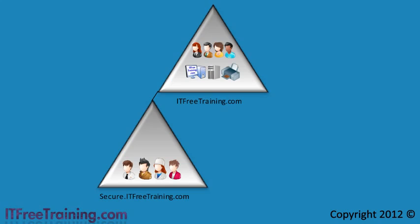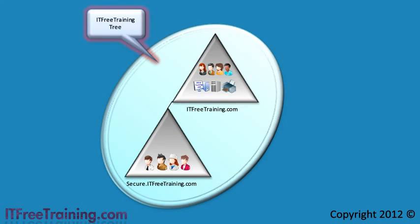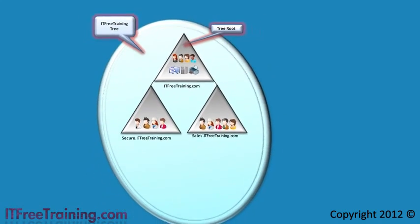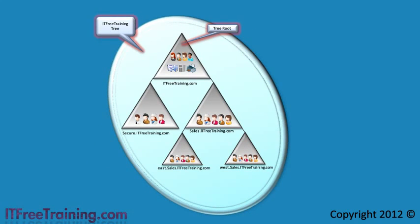When you have two domains that share the same root namespace — in this case ITFreeTraining.com — these are referred to as being in the same tree. ITFreeTraining is at the top of the tree so it is considered to be the root domain. You could add yet another domain called sales. As long as sales shares the ITFreeTraining.com namespace, it is part of the tree. Under sales.itfreetraining.com you could even add additional child domains called East and West. All these domains share the ITFreeTraining namespace and are considered to be in the same tree in Active Directory.